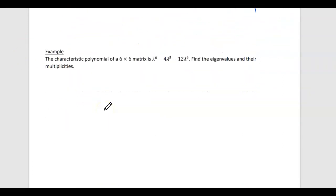All right, so let's say I know that a characteristic polynomial of a 6x6 is this matrix. Let's figure out all their eigenvalues. So characteristic equation, characteristic polynomial means that this must be true. Okay, so I could factor out an x to the 4th, and I'd be left with x squared minus, or lambda squared, minus 4 lambda minus 12.